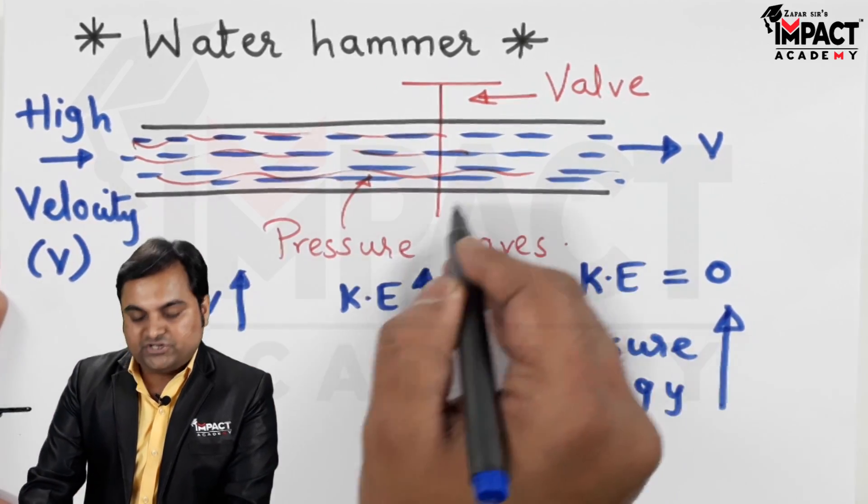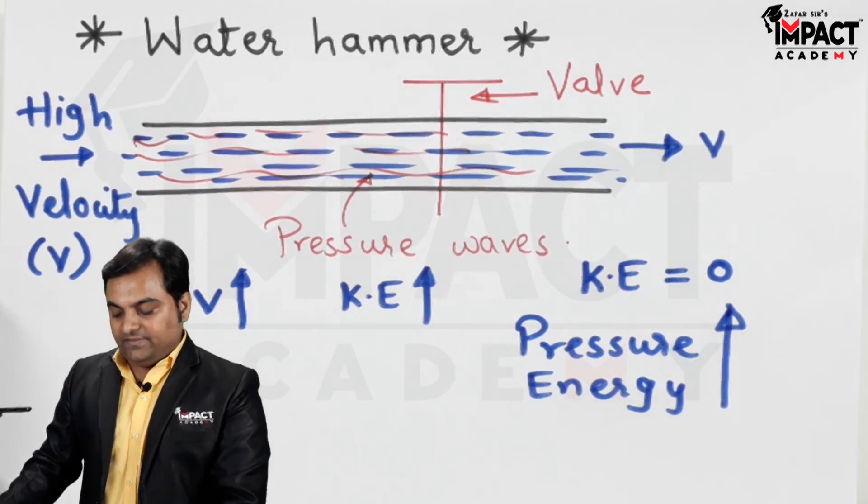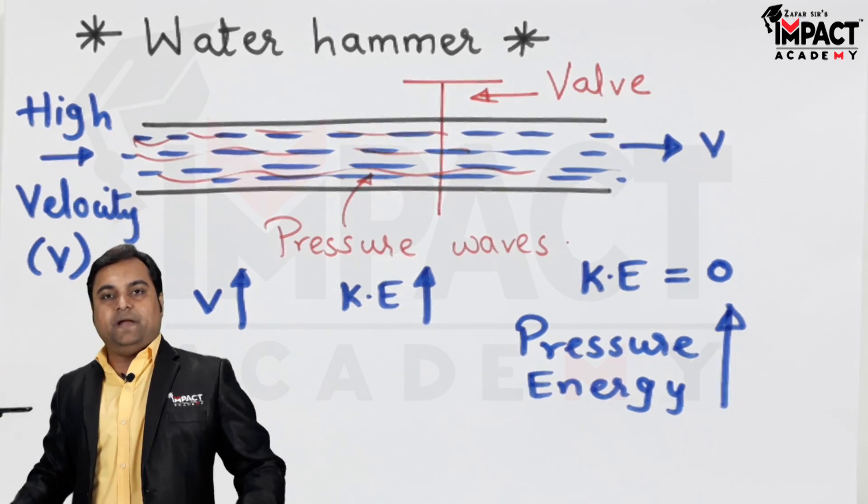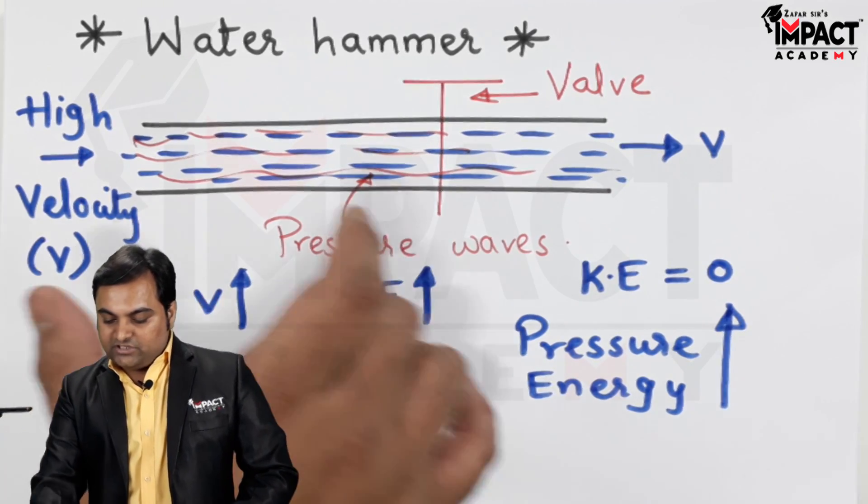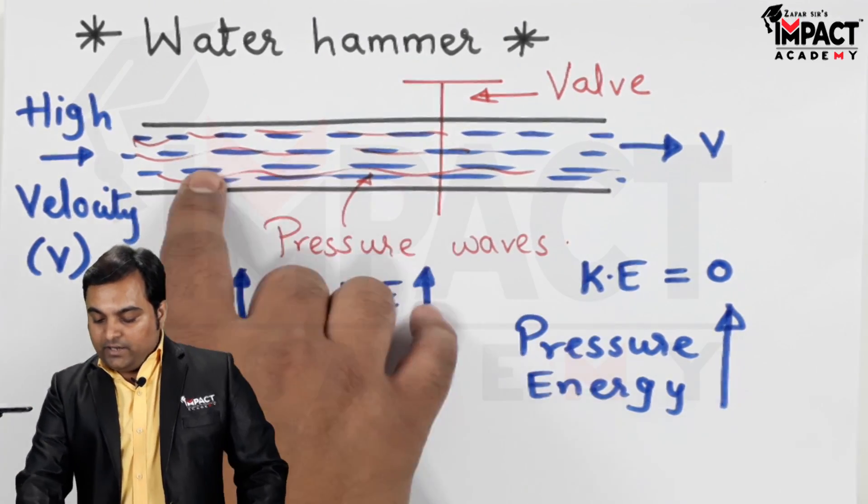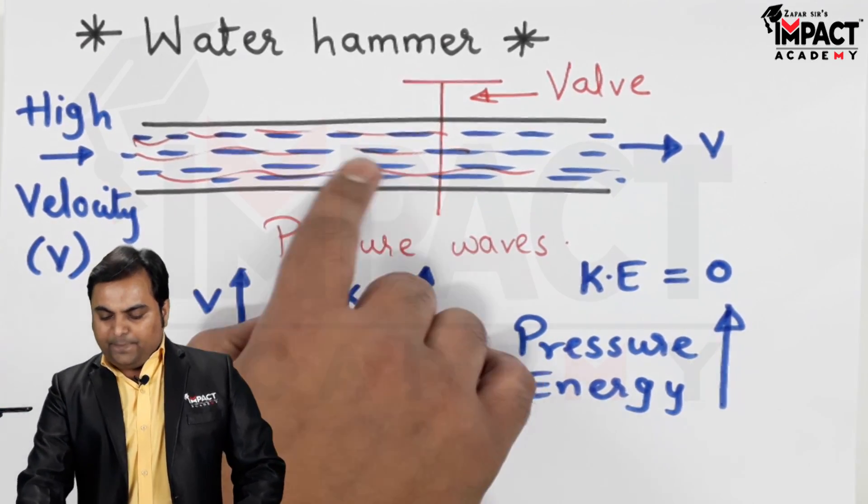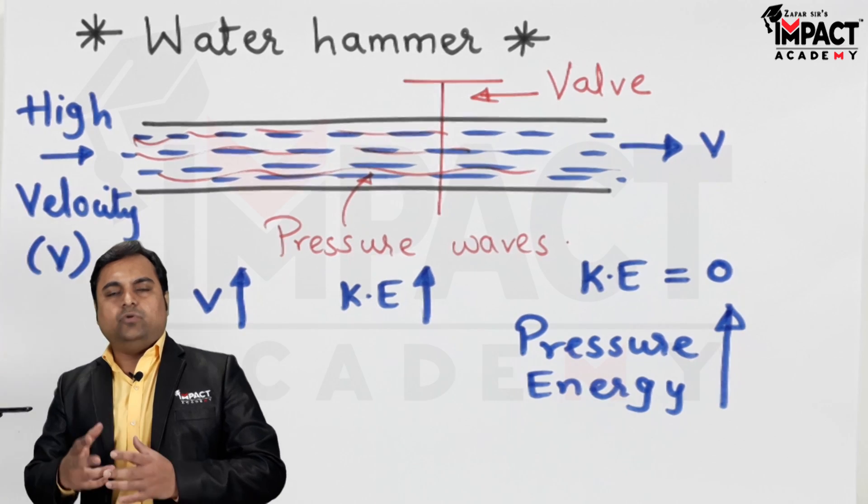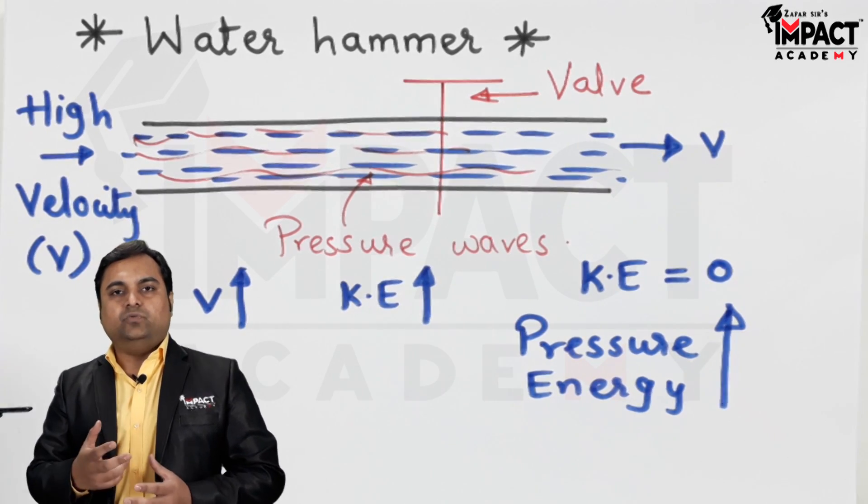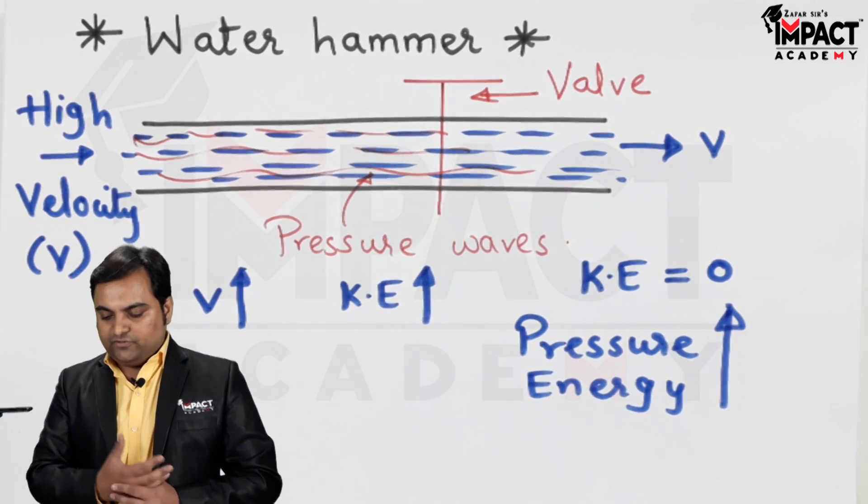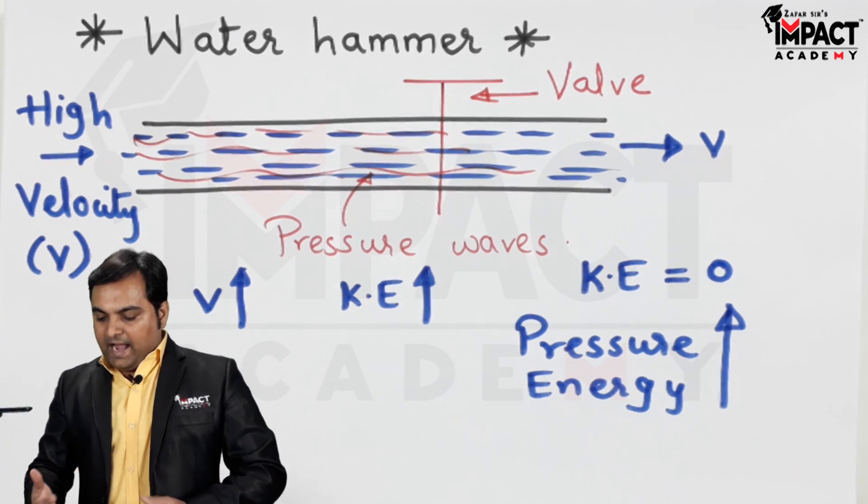It means the pressure energy will be increased tremendously. Because of that, there would be huge amount of pressure inside the pipeline and that would result in the bursting of the pipeline. So that is called as the water hammer, and it would all because of the pressure waves flowing through this pipeline.